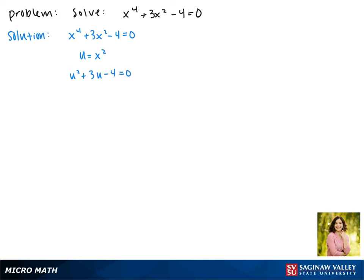Now we can factor this like a quadratic. This gives us u plus 4 times u minus 1 equals 0. Setting each one equal to 0, this gives us u plus 4 equals 0 or u minus 1 equals 0.